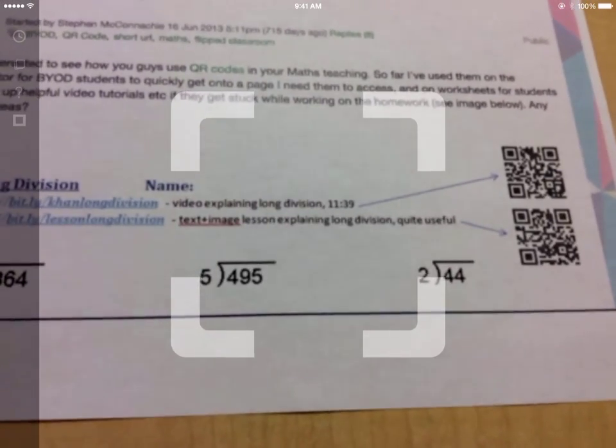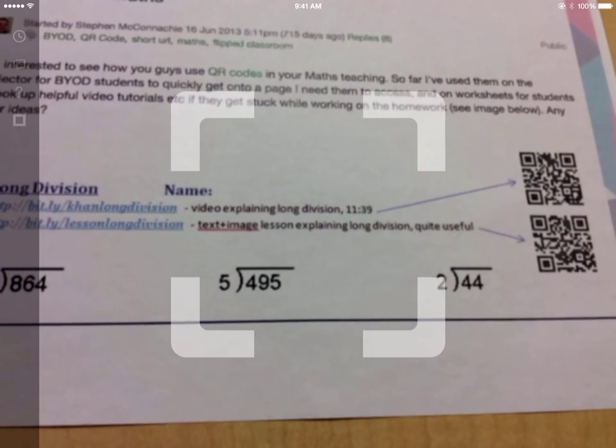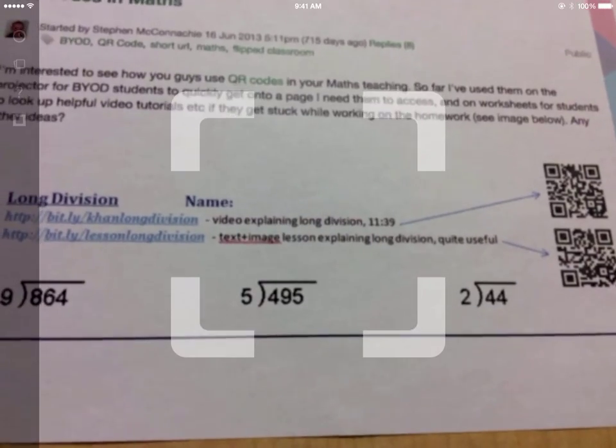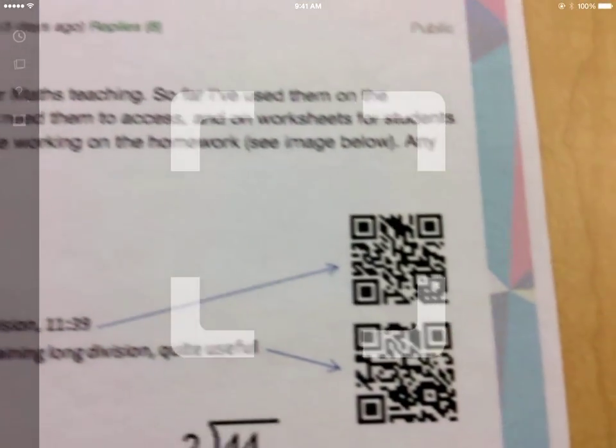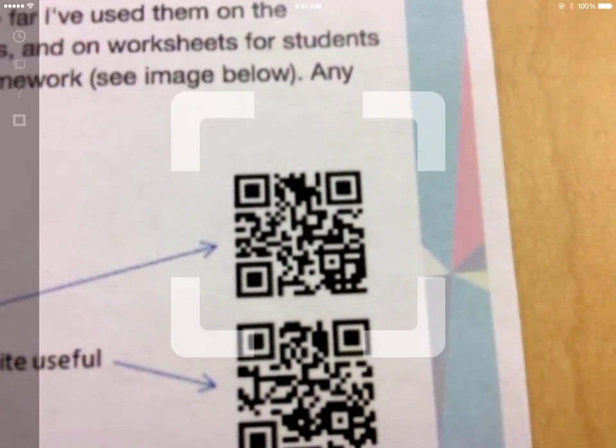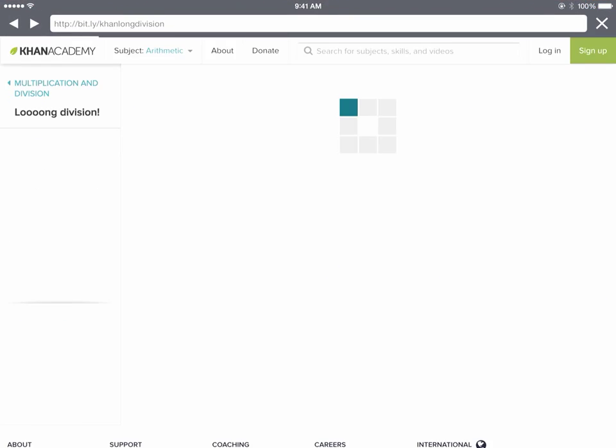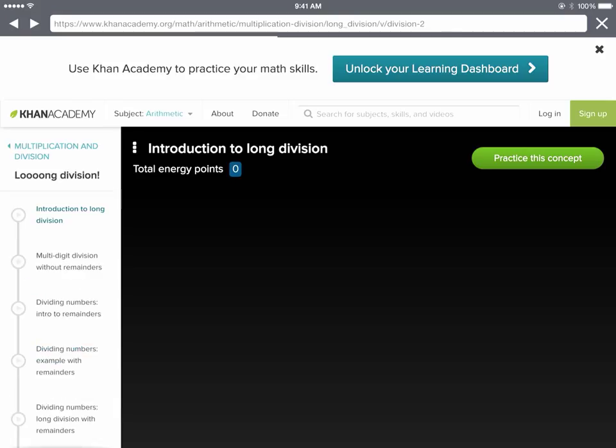Once I line up those QR codes with that square target in the middle of my QR code reader, it's going to link me off to some resources. You can see it brings me to a Khan Academy video on an introduction to long division so that I can see that skill in action if I've forgotten how to do it, which can then help me to go back and do the practice problems.